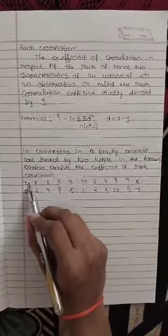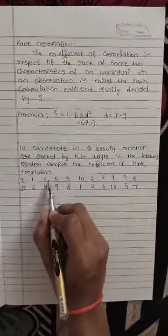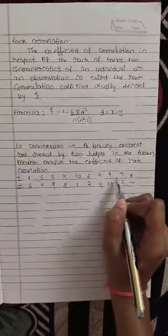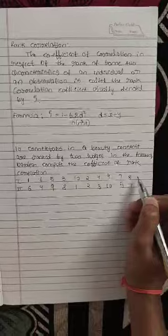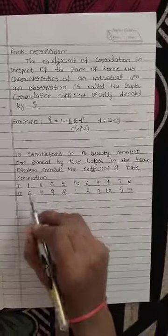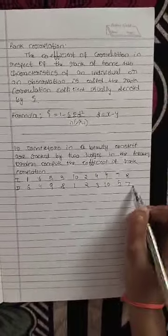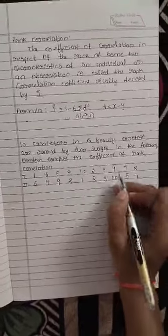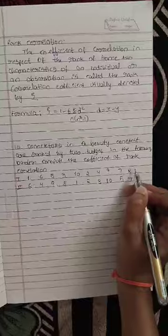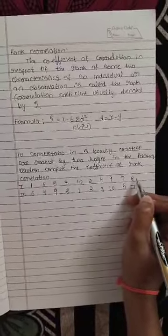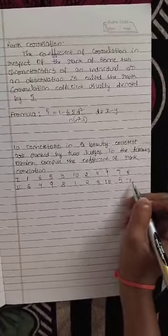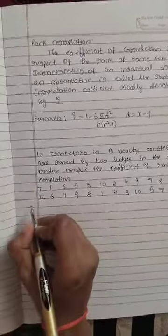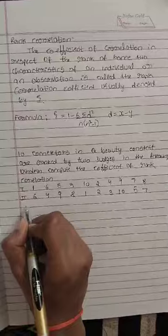These are the ranks given by two judges. The first judge ranked them 1, 6, 5, 3, 10, 2, 4, 9, 7, 8. The second judge also ranked them. First we will write the x and y values - that is, rank judged by first judge and rank judged by second judge.